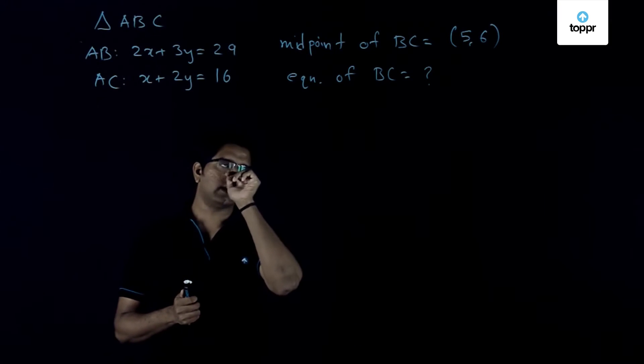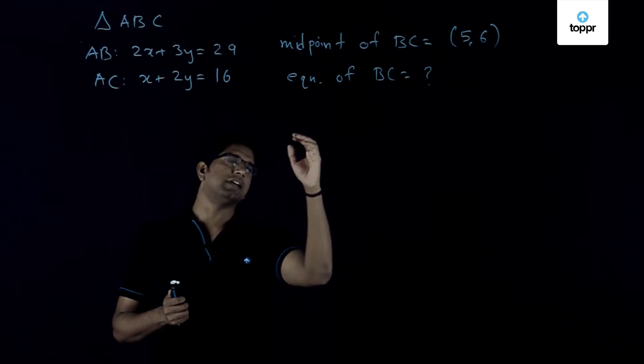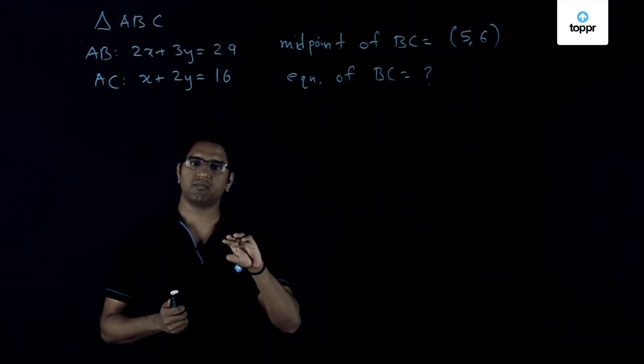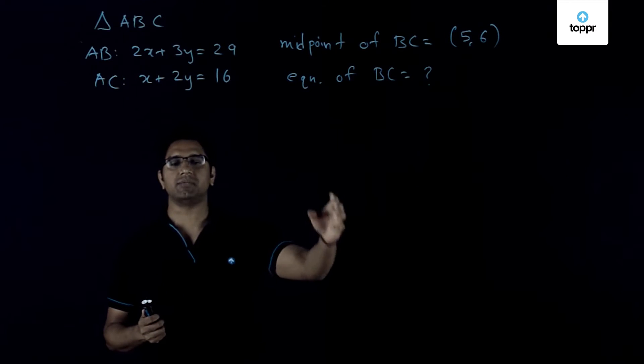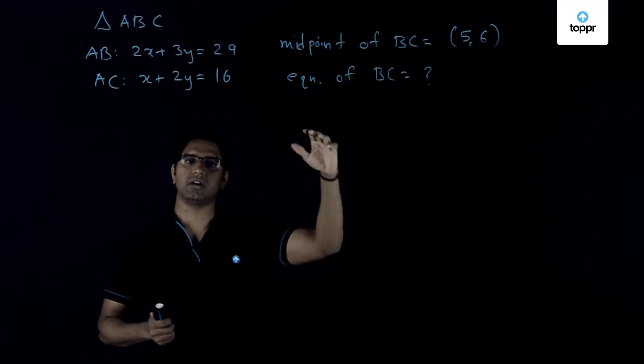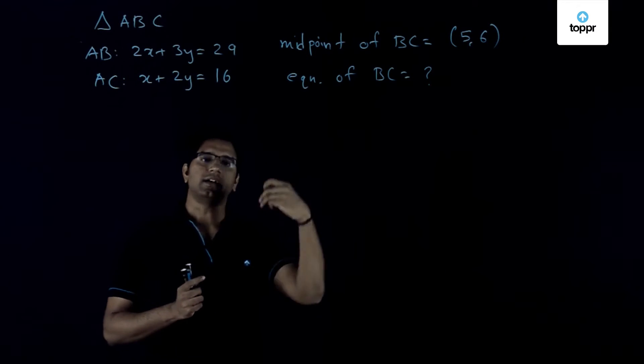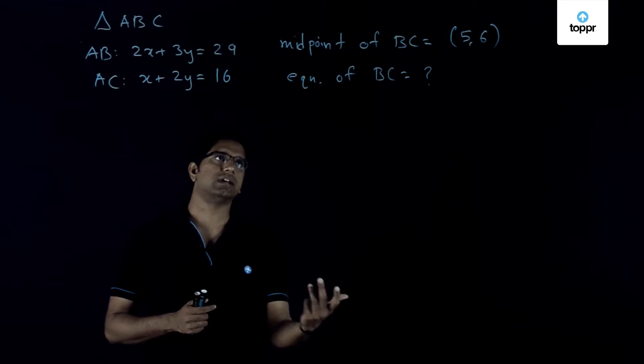One way in which we can proceed is if we can get hold of either the coordinates of B or the coordinates of C. Immediately we can get the equation of BC because we will have two points which lie on the line. That is the strategy which we will try and follow here.